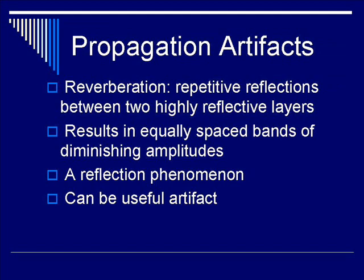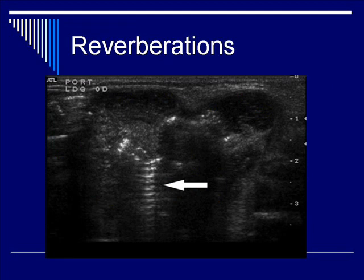In this next ultrasound still image, we show that within this tumor of an unspecified location that is reflective of the ultrasound waves, you have this classic reverberation picture of the first echo — the brightest hyperechoic band — followed by multiple lines of equally spaced bands of diminishing amplitude, as pointed out by the arrows.